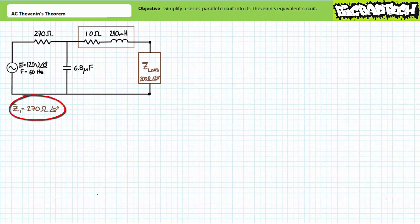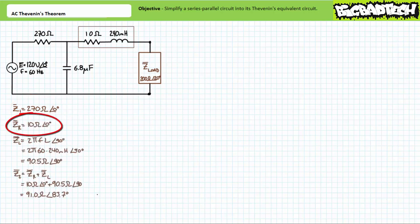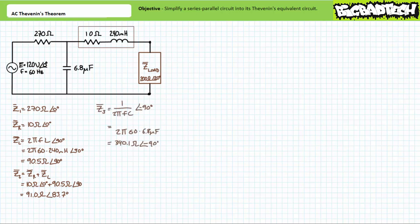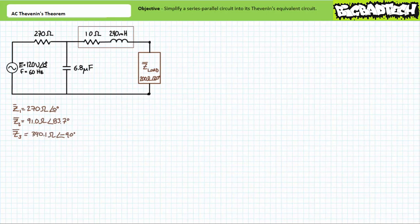The complex impedance of the 270-ohm resistor is 270 ohms at an angle of 0 degrees — let's call this Z1. The complex impedance of the resistive portion of the non-ideal inductor is 10 ohms at an angle of 0 degrees — let's call this ZR. The inductive portion of the non-ideal 240-millihenry inductor at 60 hertz will be 90.5 ohms at an angle of 90 degrees — let's call this ZL. The resistive and inductive portions are in series, so the non-ideal inductor represents a complex impedance of 91 ohms at an angle of 83.7 degrees — let's call this Z2. Finally, the complex impedance of the 6.8-microfarad capacitor at 60 hertz is 390.1 ohms at an angle of negative 90 degrees — let's call this Z3.